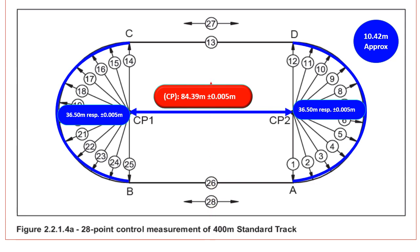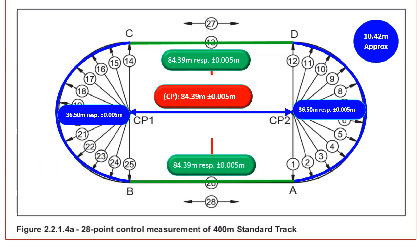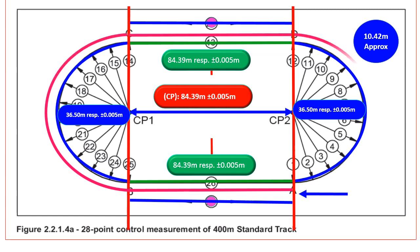Measurement 13 and 26, 84.39 meters respectively, plus or minus 0.005 meters. Measurement 27 and 28, alignment of the strides. And the track length calculated after equalization may not be less than 400.000 meters or more than 400.040 meters.